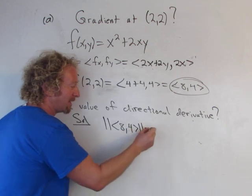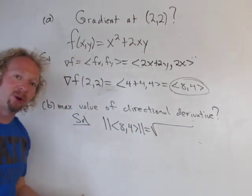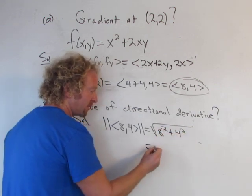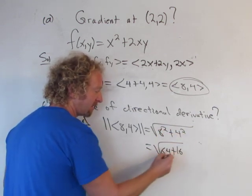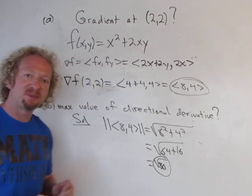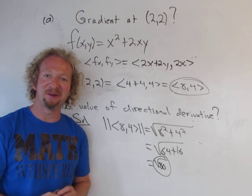So it's the square root, and then you just square the components. So 8 squared plus 4 squared. So it's going to be 64 plus 16. So that's the square root of 80. And I suppose you can simplify that, but I'm just going to leave it and be lazy. I hope that made sense.